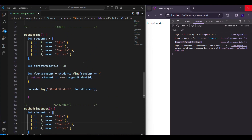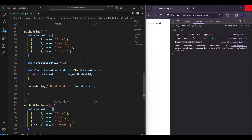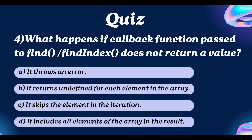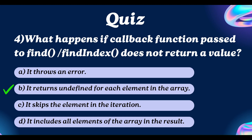This was all about findIndex. Let's have a quiz on these topics as well. What happens if the callback function passed to find and findIndex does not return a value? Answer in the comment section below and pause the video. The correct answer is: it returns undefined for each element in the array — if it does not return a value, it would return undefined for each element present.